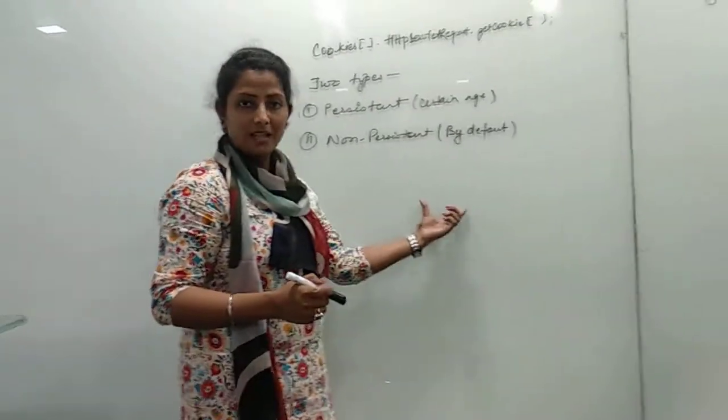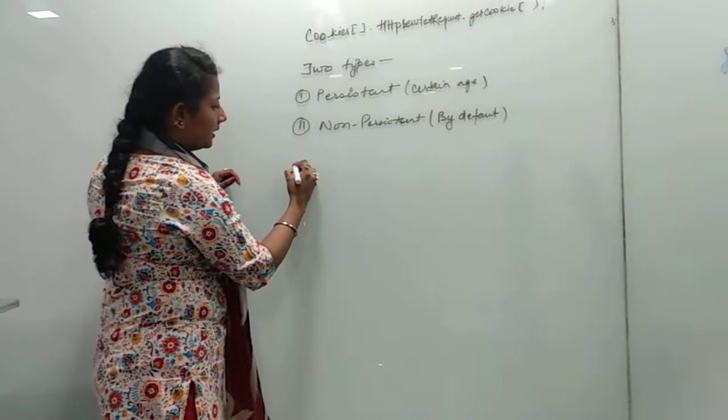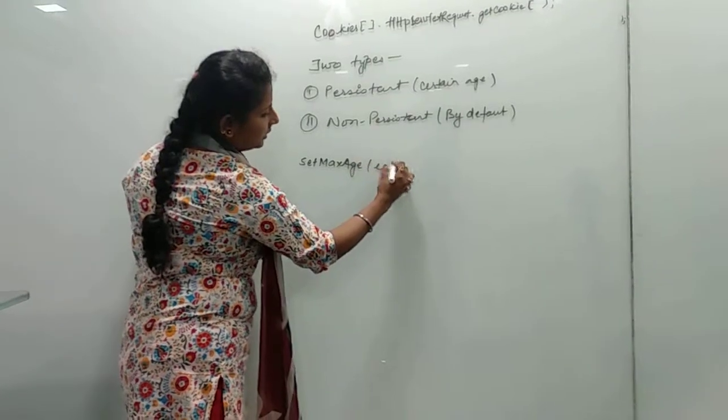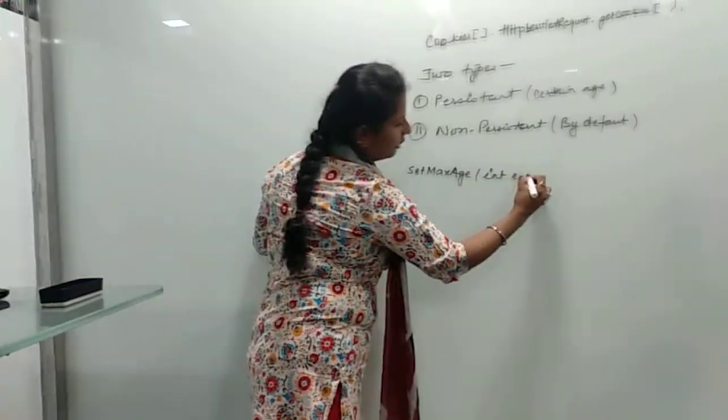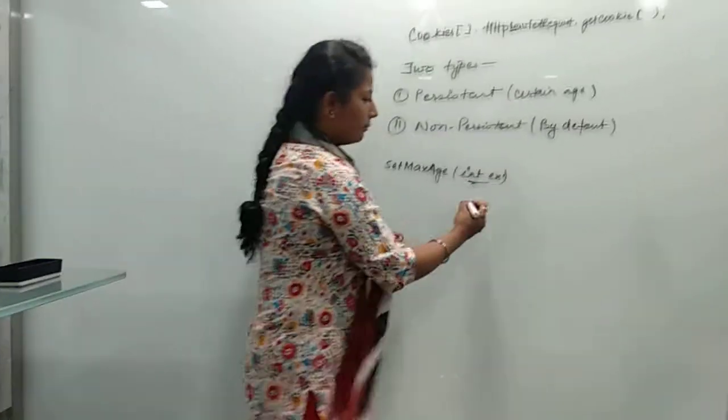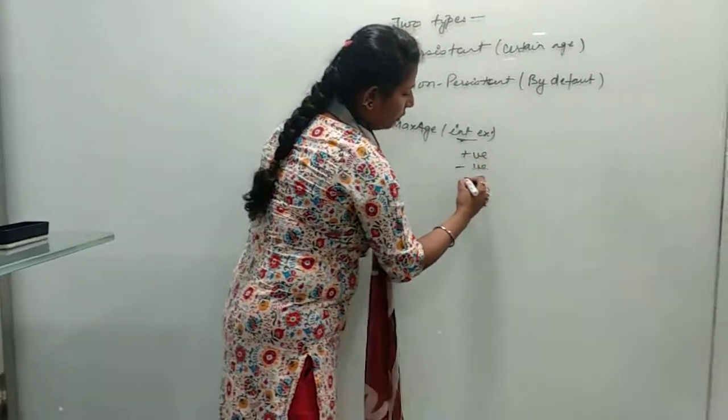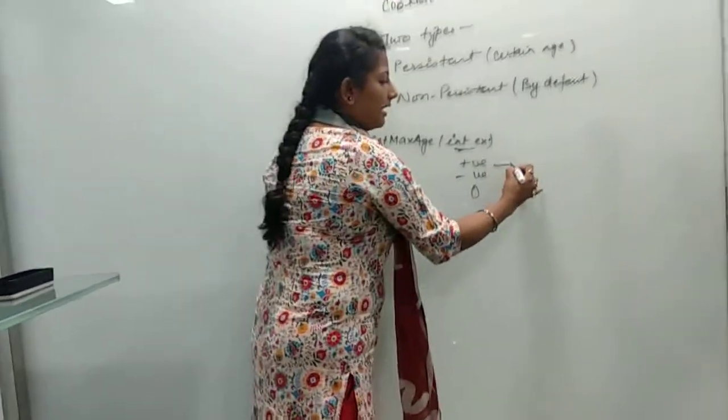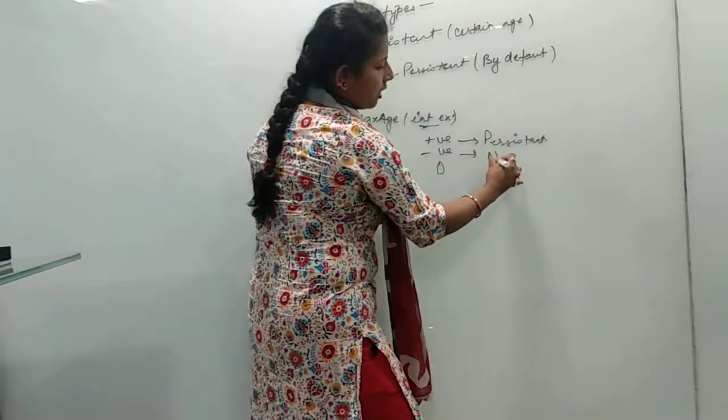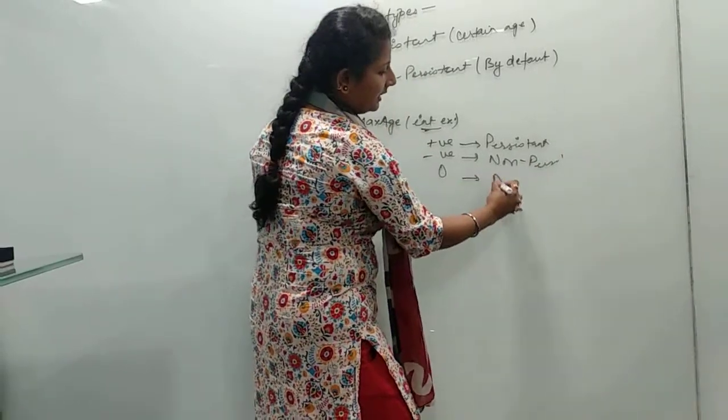How to define to what age a cookie should live? For that, we use a method setMaxAge which accepts an integer type value. Inside this, we can provide either positive value, negative value or zero. A positive value means persistent, a negative value means non-persistent and zero means delete it immediately.